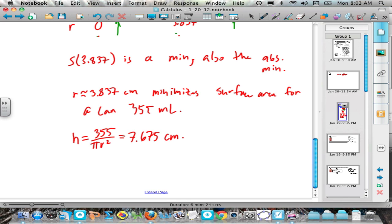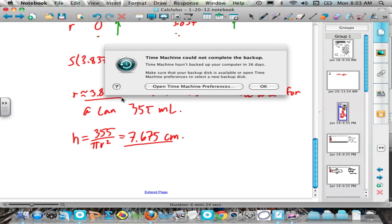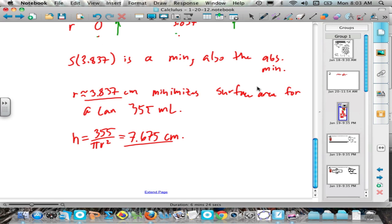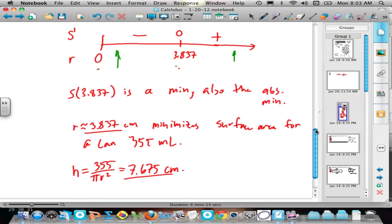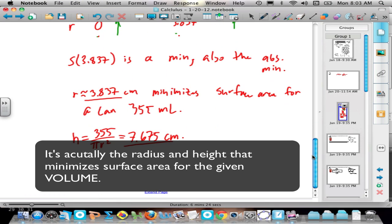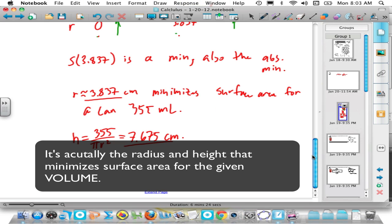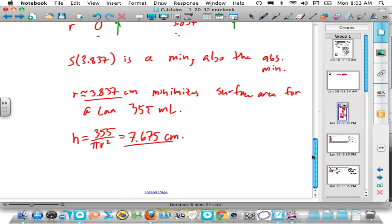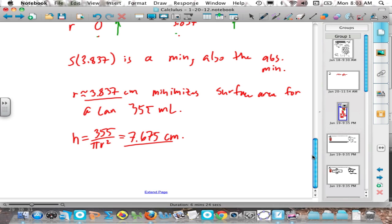So you have the height, and you have the radius of a can that will minimize, get the minimum amount of surface area for that height and radius. Now it's up to you to see if the manufacturers actually use those dimensions. So go out and grab your favorite 355 milliliter can of soda or actually also 12 ounces and see if they've done their job.